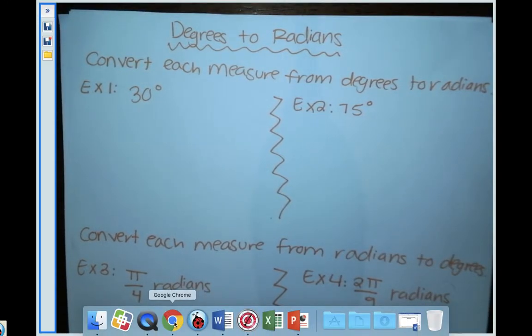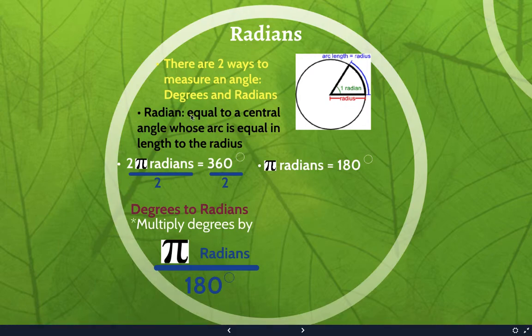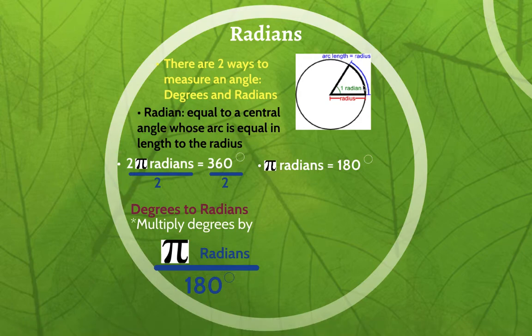Another way to measure an angle is in radians, which I'm going to go back to the Prezi to recap what that is. So radians - a radian is if you have an angle whose arc length is equal to the same length as the radius, that angle is one radian.